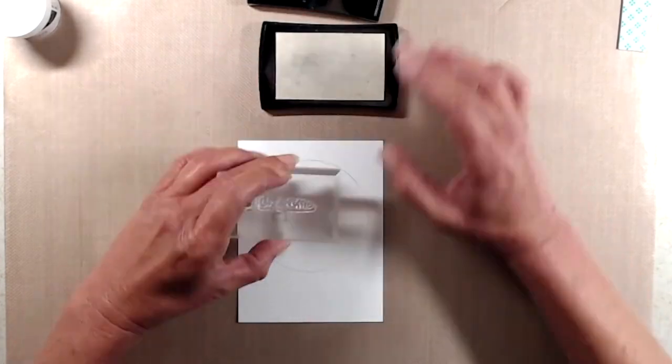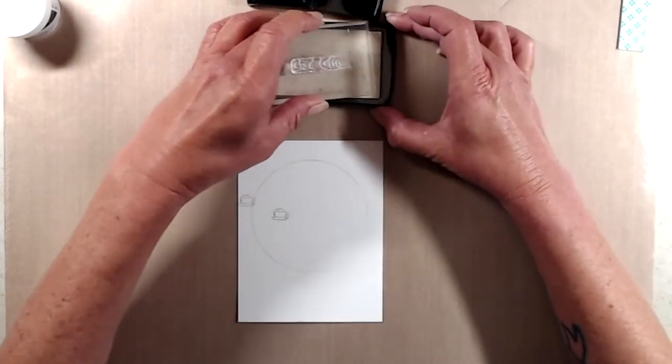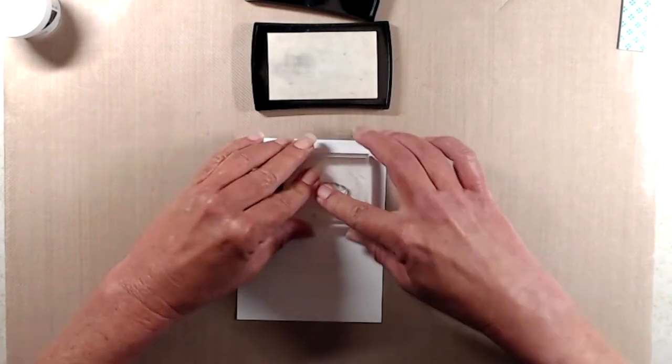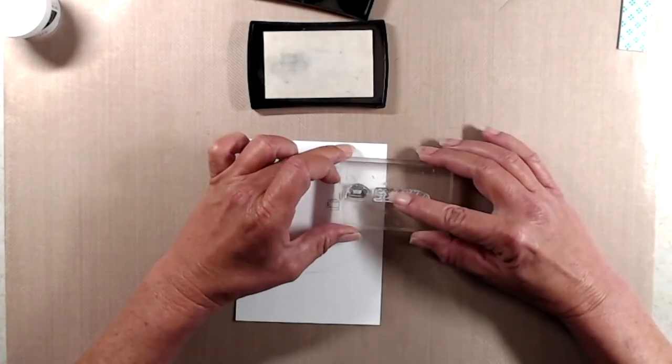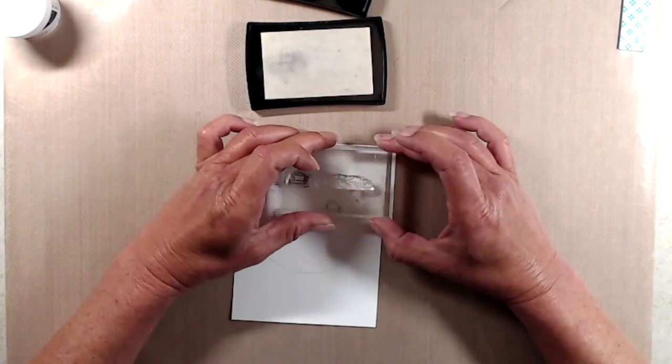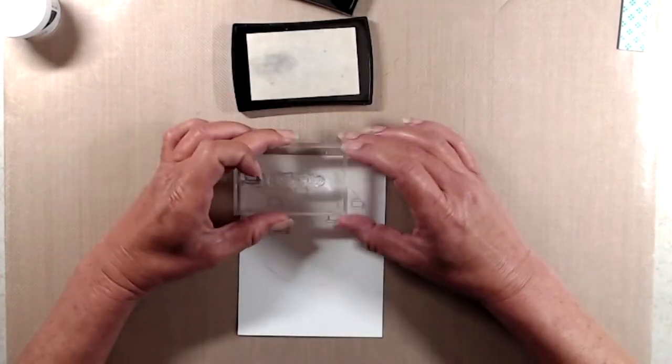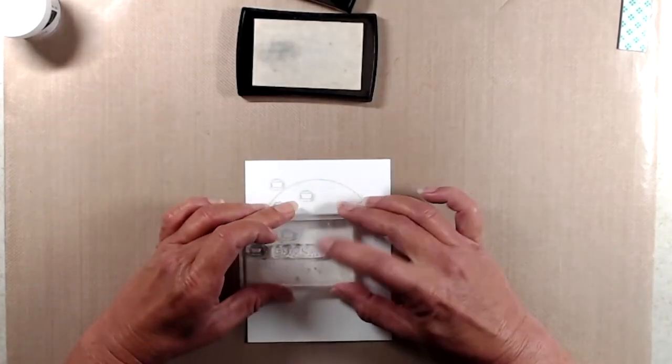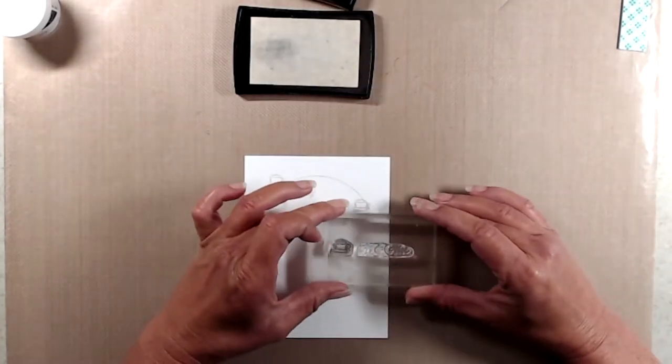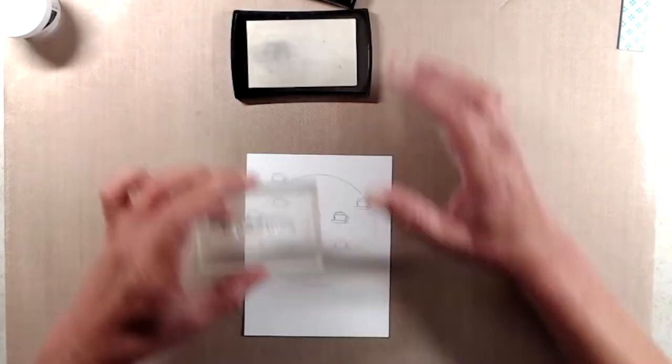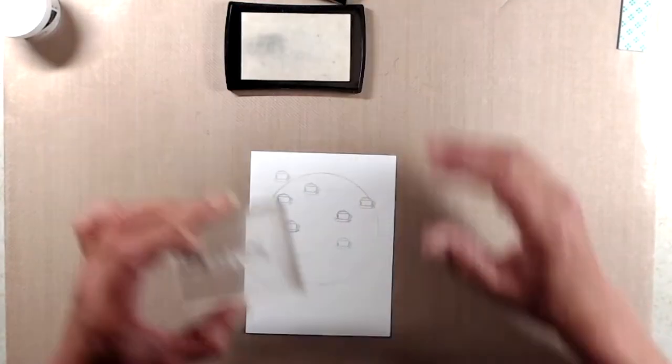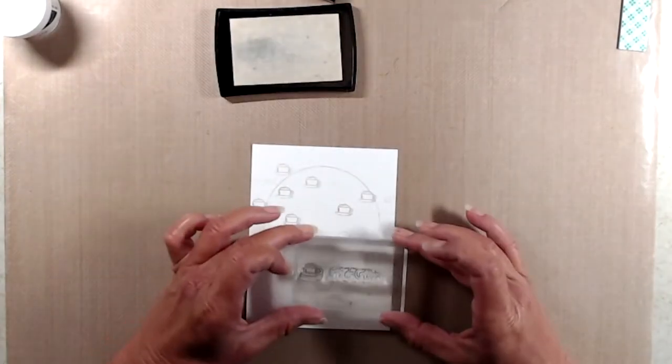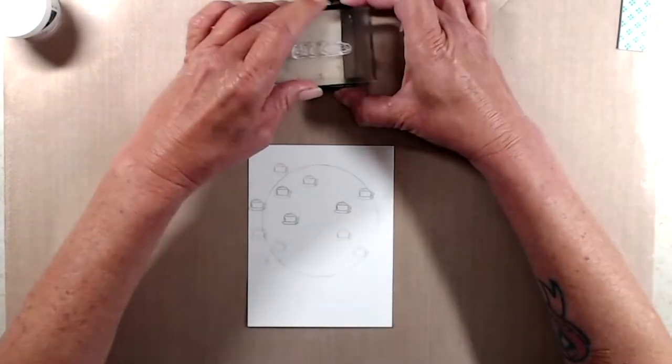Anyway, let's get on to this project right here. The stamp set I'm using is called Let's Do Coffee. I started out with a piece of Neenah Classic Crest cardstock cut to 4 by 5.25 inches. I used a little template stencil and drew a circle with pencil just so I would know where to keep my stamping inside that circle.